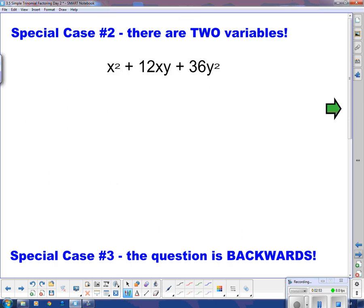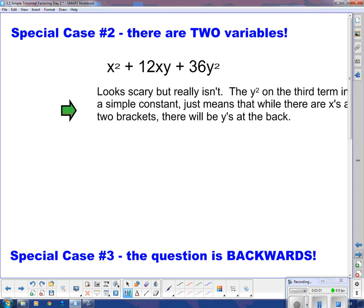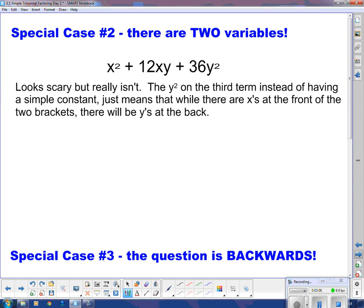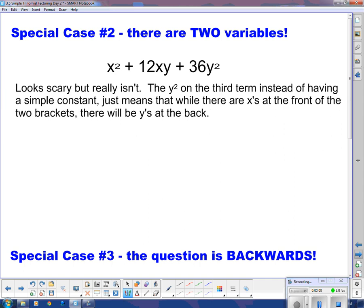Here's special case number 2. There are two variables. Oh no, this looks complicated. Looks scary, but really it isn't. The y squared on the third term, instead of having a simple constant, just means that while there are x's at the front of the two brackets, there will be y's at the back.